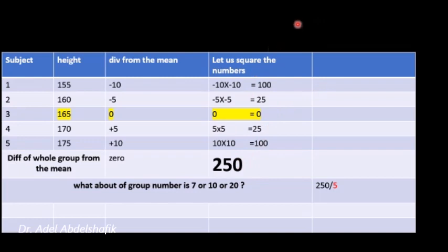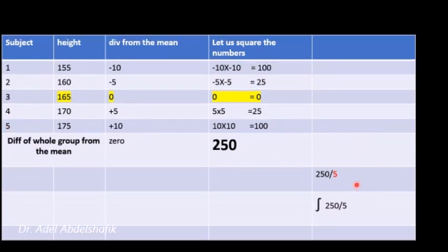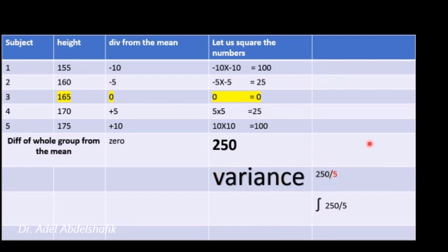But if the group size is not 5 but 7, 10, or 20, we need to account for that, so we divide the total by the number of data points — in our example, divide by 5. This gives the variance. Then, since we started by squaring numbers, we take the square root of the variance to get back to the original scale. This is known as the standard deviation. Variance and standard deviation are two expressions of the same thing — one is the square root of the other.